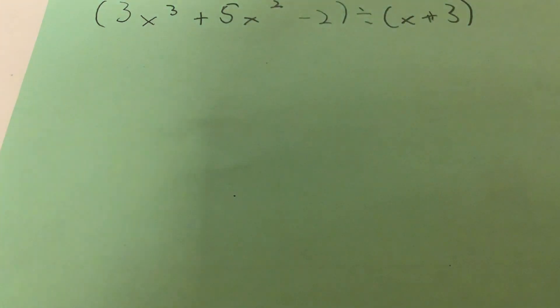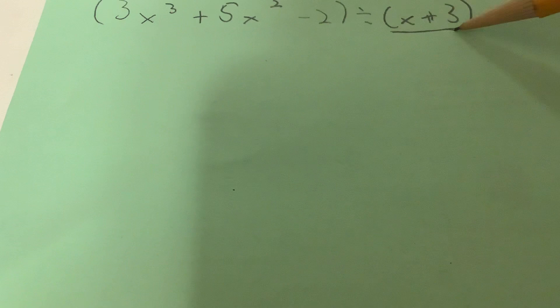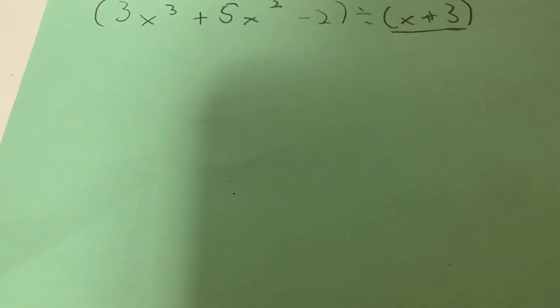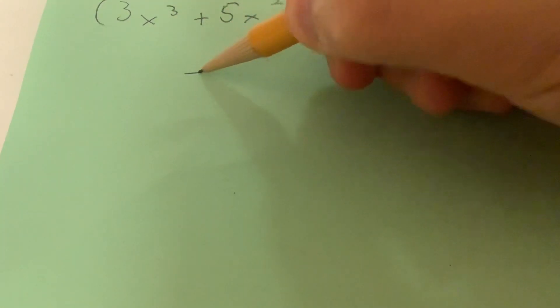So basically, if the second number here is in the form of x plus a, or x minus a, then you just take the opposite of this number, which is negative 3 in this case. So you put negative 3 right here.